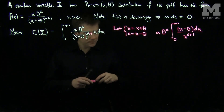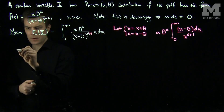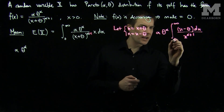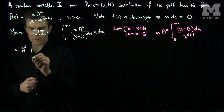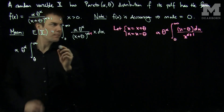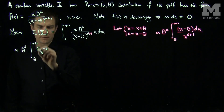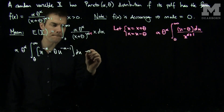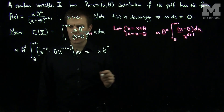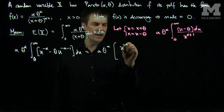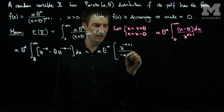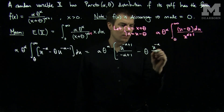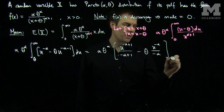We can simplify this as alpha theta to the alpha, with the bottom of integration becoming theta. So the integral from theta to infinity of u to the negative alpha minus theta times u to the negative alpha minus 1 du. The antiderivative of this will be u to the negative alpha plus 1 over negative alpha plus 1, minus theta times u to the negative alpha over negative alpha, evaluated from theta up to infinity.